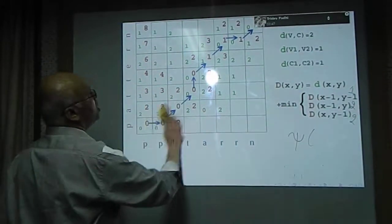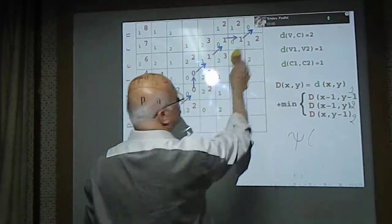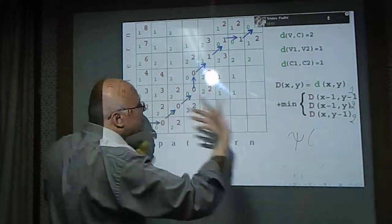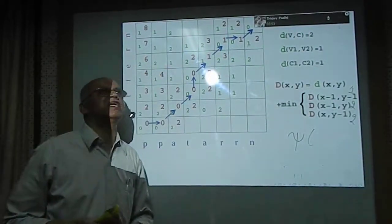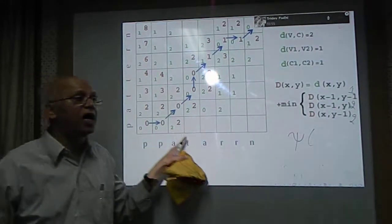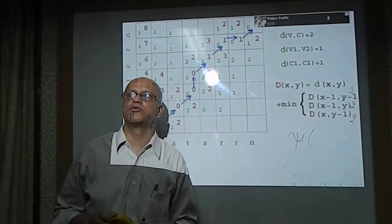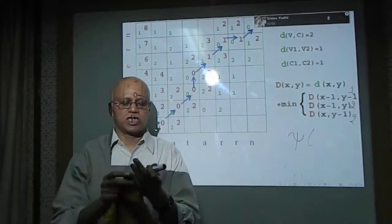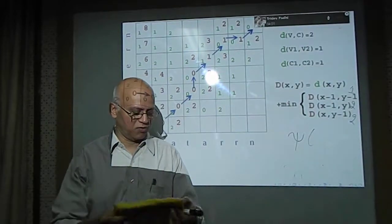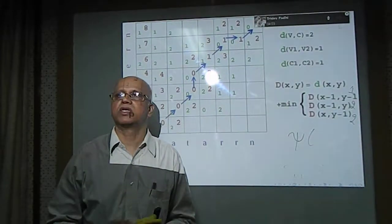This is called backtracing, and this is theoretically and for illustration purposes appealing. This information will be useful when you want to, for example, make a composite reference pattern for dynamic time warping.